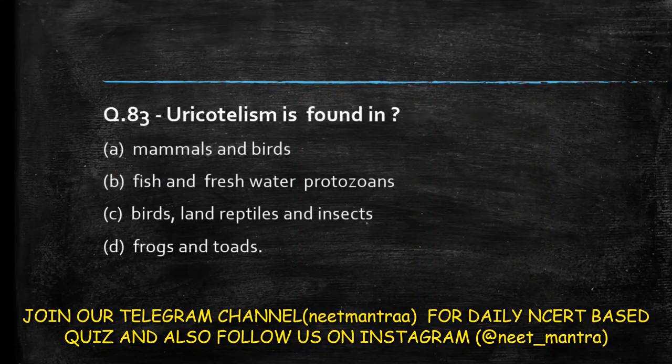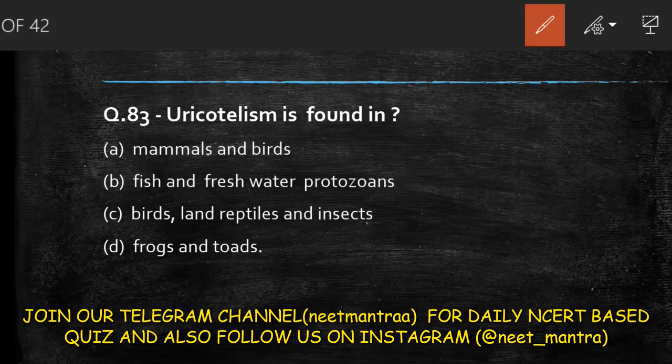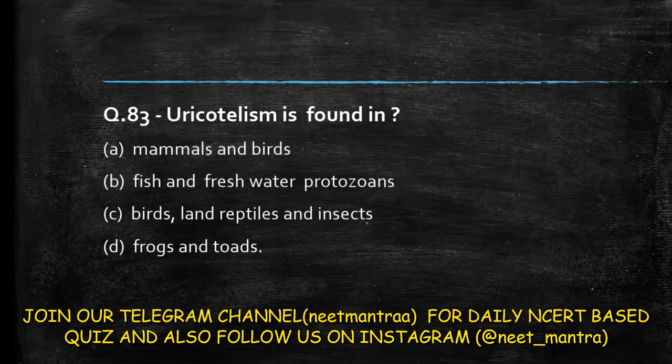Next question: uricotelism is found in — mammals and birds; fish and freshwater protozoa; birds, land reptiles and insects; frogs and toads? Uricotelism means the excretory product is uric acid. The answer is option C: birds, land reptiles, and insects.